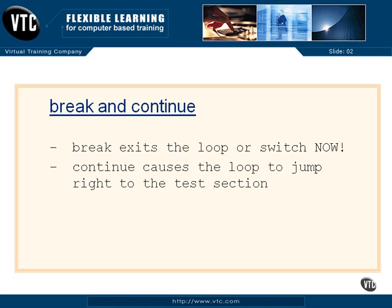We haven't seen continue yet, but what continue does is it causes the loop's execution to jump right to the test section. If it's a do while, it jumps to the bottom, to the while expression. If it's a normal while, the continue skips over all of the rest of the statements of the while that are after the continue and jumps up to the expression to see if we should leave or not.